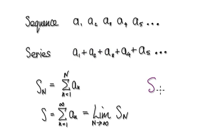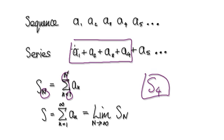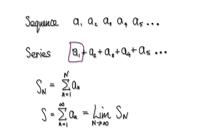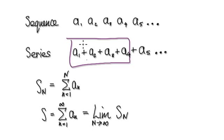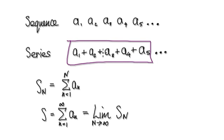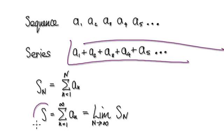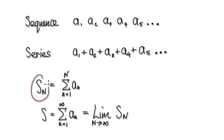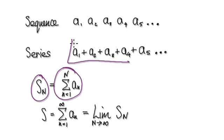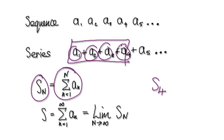So S3 gives you that sum. With S4, you're summing from 1 to 4. So basically: S1 is the first term, S2 is summing up the first two terms, S3 is summing up the first three, S4 is summing up the first four, and S5 is summing up the first five terms. If you sum all the way to infinity we denote that with capital S. If you only sum up to a certain point, like S4, that's called a partial sum — you're only summing up part of the whole thing.